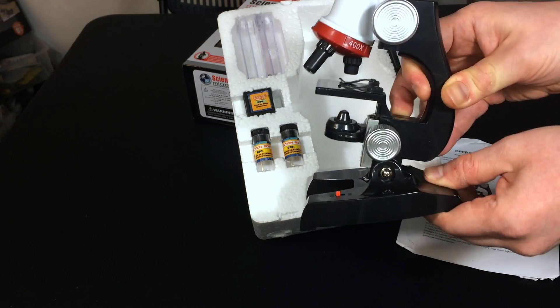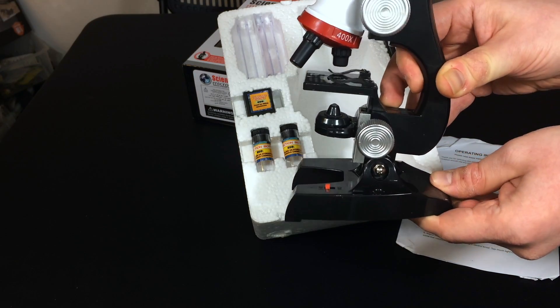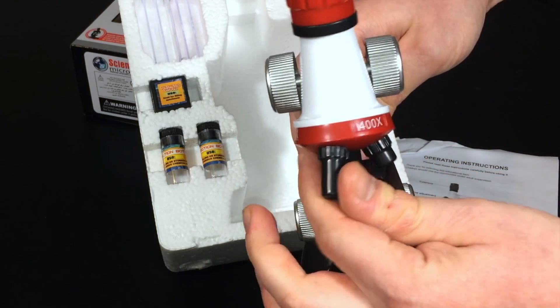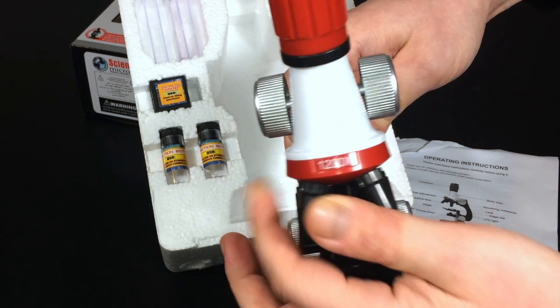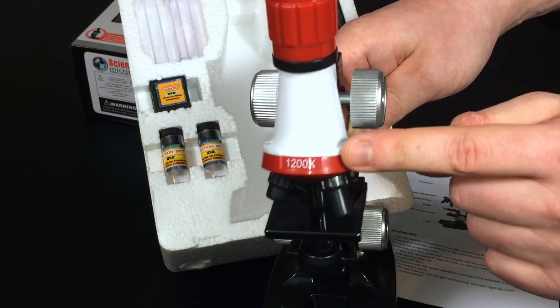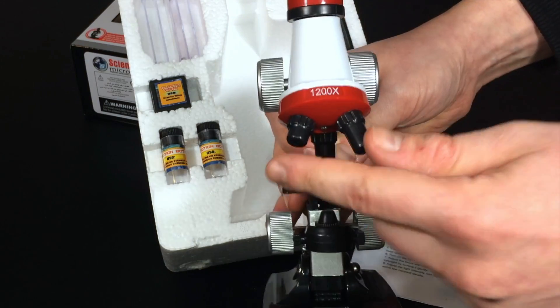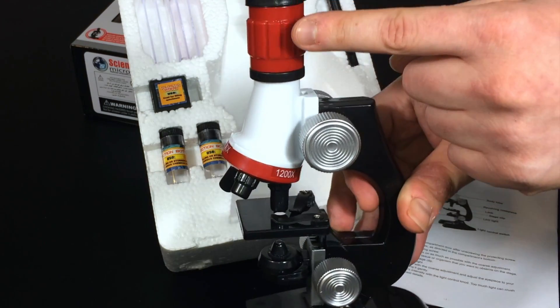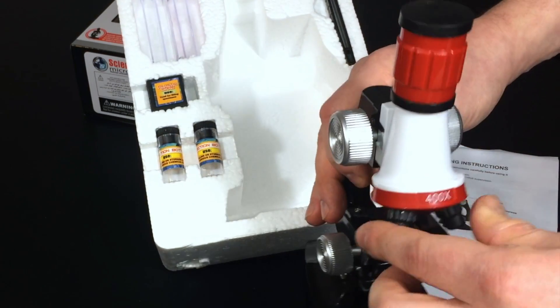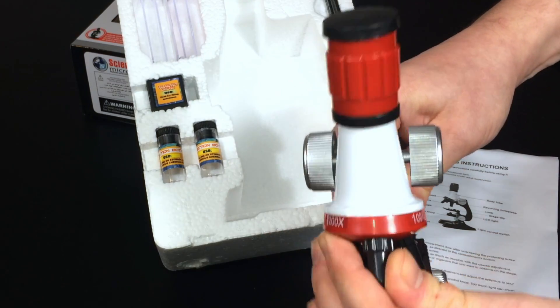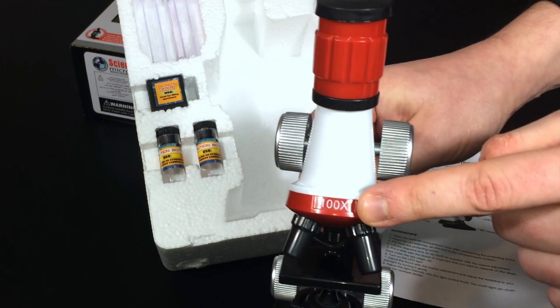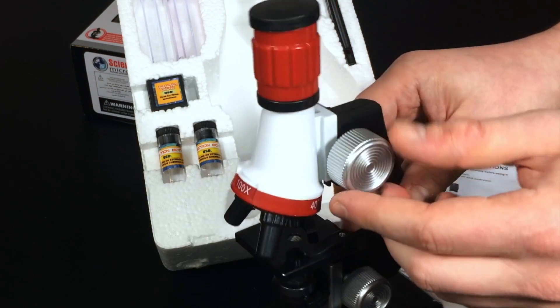Pretty cool. Basically, you have a full functioning kids type microscope. You have basically all the parts that you would expect. You have a hundred times magnification here. And as we turn it, now we have 400 times and obviously the largest 1,200 times. The way this is achieved is, in reality, this actual objective itself is not 1,200 times.